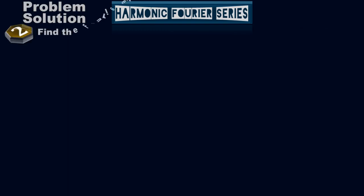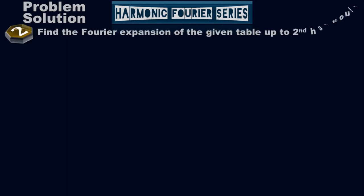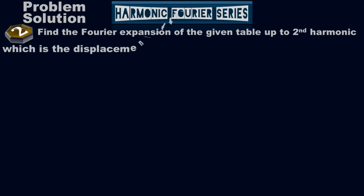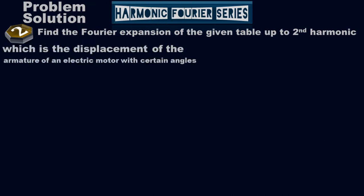Example number two. Find the Fourier expansion of the given table up to second harmonic, which is the displacement of the armature of an electric motor with certain angles.